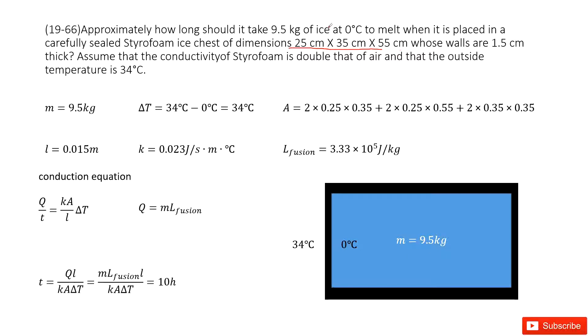We're told the mass of the ice. The ice will melt at zero degrees. When it is placed in the surrounding environment, the temperature is 34 degrees. It's covered by a plastic cover. And we're asked how long it takes for the ice to melt.